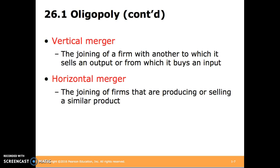Horizontal mergers are the joining of firms that are producing or selling a similar product. For example, consider a computer chip manufacturing company. A vertical merger for this company would be purchasing a silicon mine, or on the opposite end, purchasing or merging with a computer company that would have typically bought their components. A horizontal merger would be the merger of several computer chip manufacturing companies into one company.